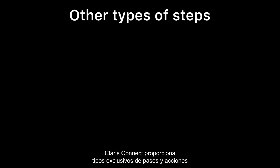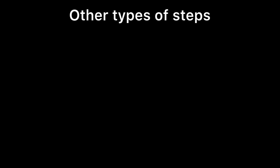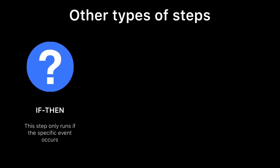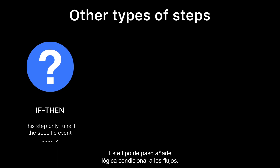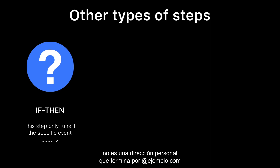Claris Connect provides unique types of steps and actions when developing flows. One of these steps is an if-then step. This type of step adds conditional logic to your flows, meaning that a step only runs if a specific event occurs. For example, you can check that an email address is not a personal email address ending with @example.com, and if not, adds that email address to a subscriber list.